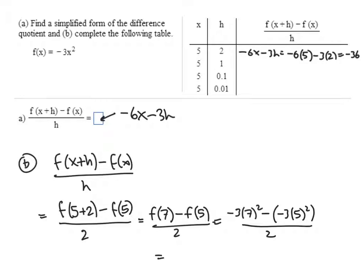So 7 squared is 49. Multiply that by 3, we get 147. So negative 147. 5 squared is 25 times negative 3 is negative 75. Minus a minus is a plus, so we get plus 75. All divided by 2.